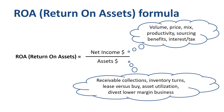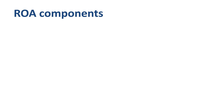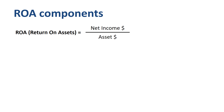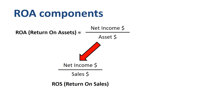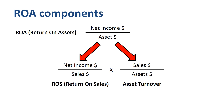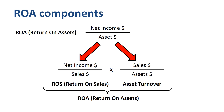Here's another way to look at the drivers of Return on Assets performance. ROA is influenced by two factors: ROS or margin performance, and asset turnover, which you could call speed or velocity. To perform better on ROA, dedicate resources to improving margins as well as to improving speed.